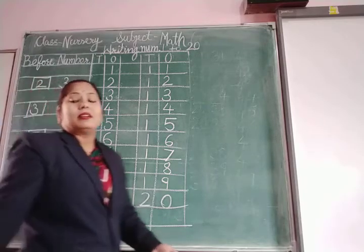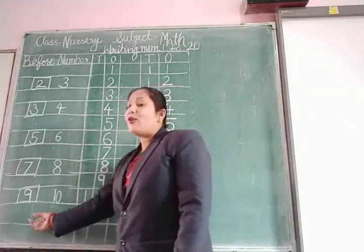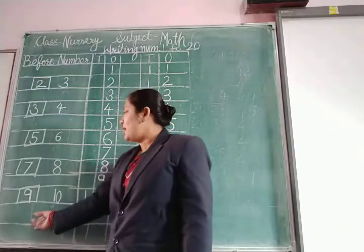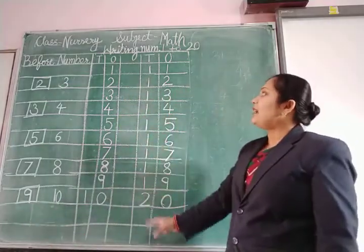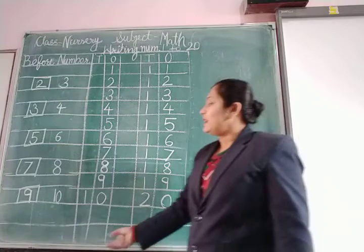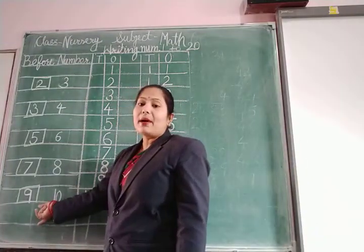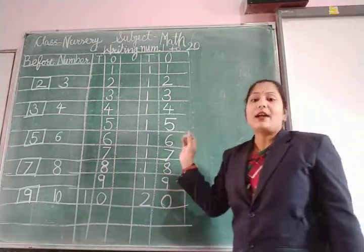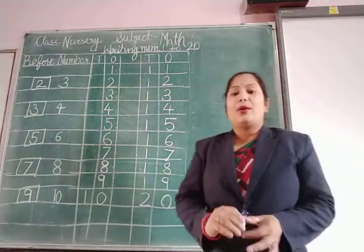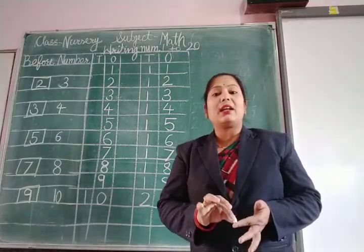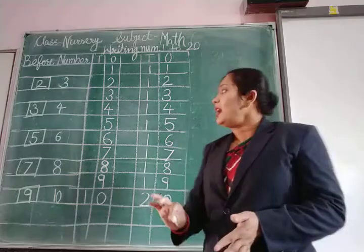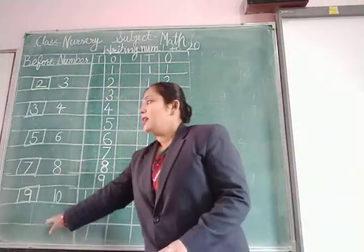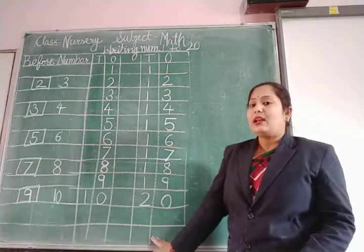Once again, see here — these are before numbers. Before means pahle. First you write numbers 1 to 20, then we do before number. Now we start oral counting 1 to 50. Repeat after me. This is your writing work. Then I start oral work.